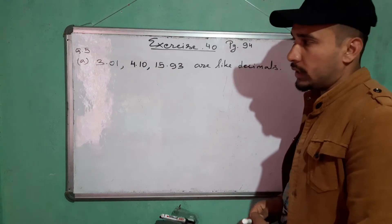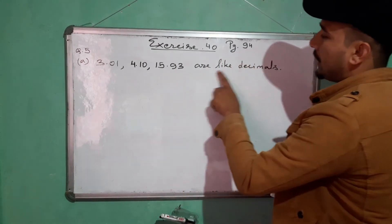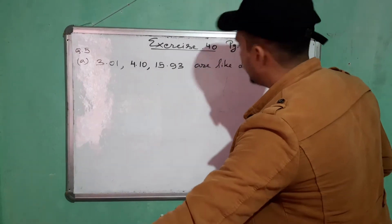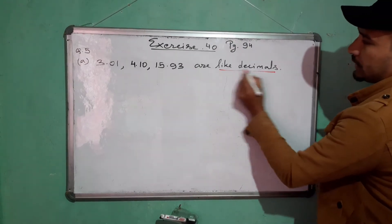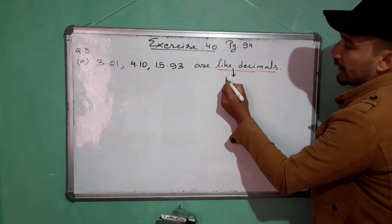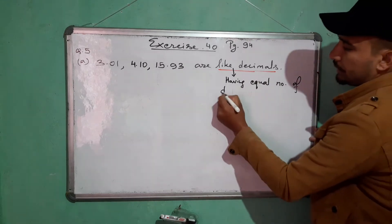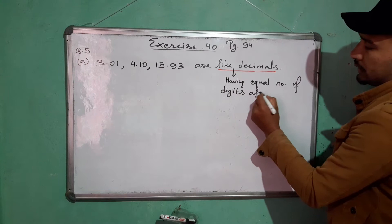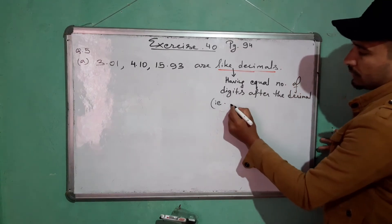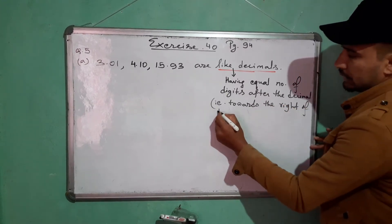Statement (a) is: 3.01, 4.10, and 15.93 are like decimals. We have to check whether this statement is true or false. Before that, we should know the meaning of 'like decimals.' Like decimals means decimal numbers having an equal number of digits after the decimal — that is, towards the right of the decimal point.